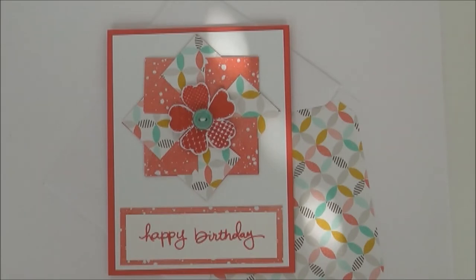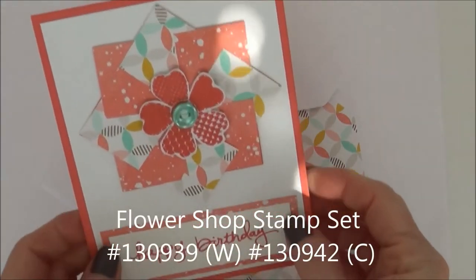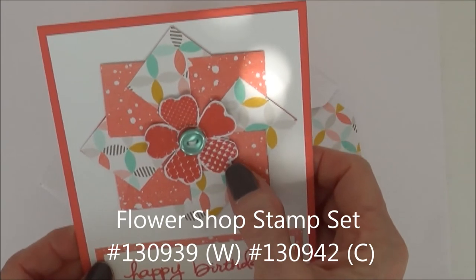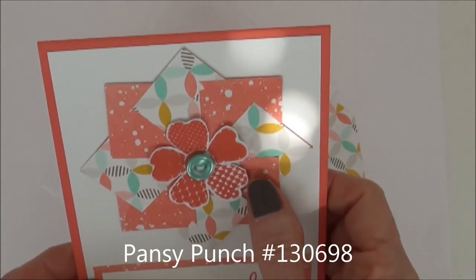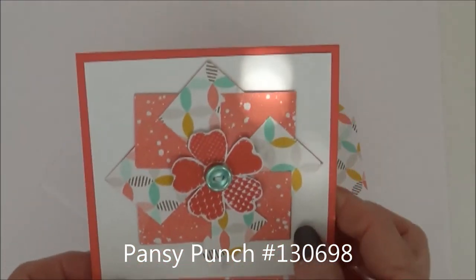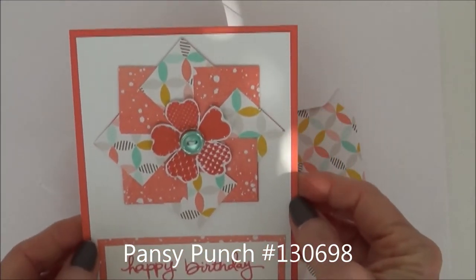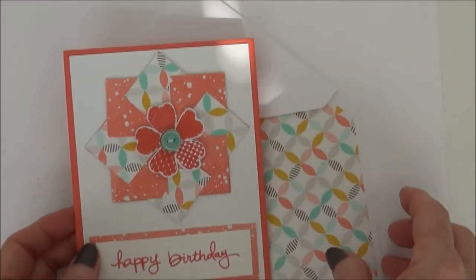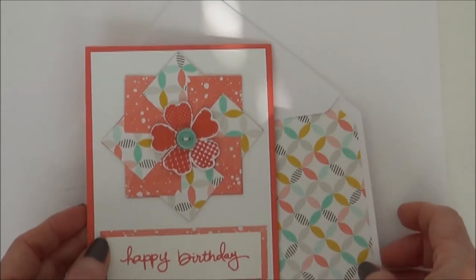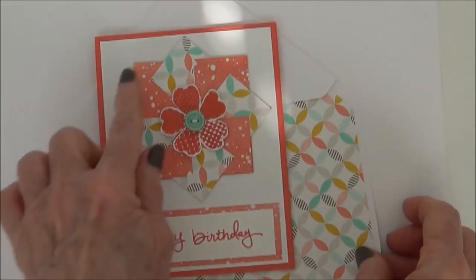And you're going to come up with all kinds of ideas. On this card, I actually used the Flower Shop stamp to stamp the flower on here and I used the Pansy punch to punch it back out. This card was done with Calypso Coral. All that supply list will be on my blog. Mainly this video is just going to be a technique video, a quick one to show you how to make the pinwheel itself.